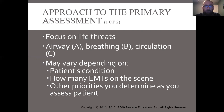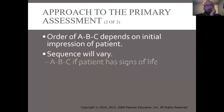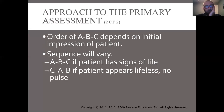In CPR, we learned the CAB method when somebody is down on the ground. We check circulation first — we check their pulse — and if they don't have one, then we start compressions. Then we open their airway, A, and then we give them breath, B. So we do CAB for CPR. You'll have to quickly think through which method you're going to use when you find your patient — is it ABC, is it CAB, and so on. The sequence will vary.